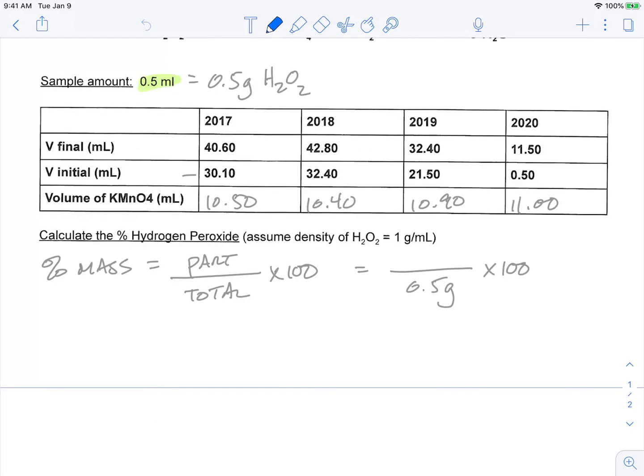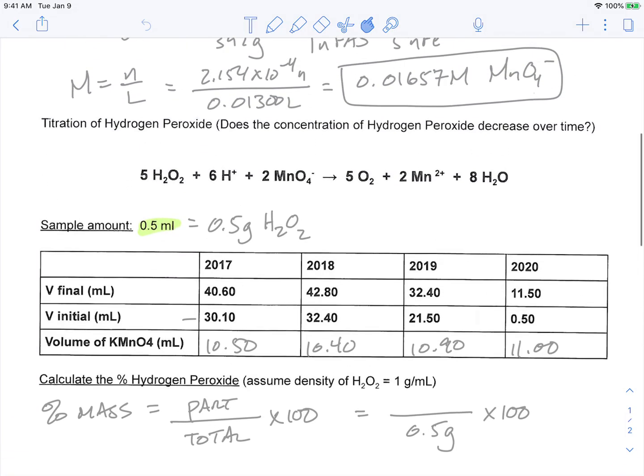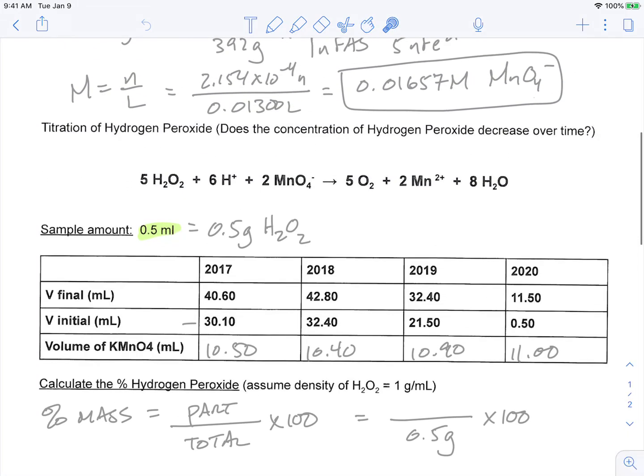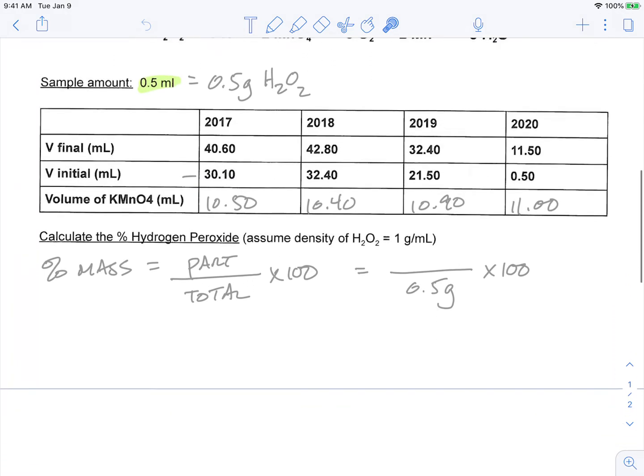All right, everybody. Hopefully what we figured out is that we have to use the concentration of our potassium permanganate solution and use the volume of potassium permanganate that we use to figure out the number of moles. So as a reminder, we know the concentration of our potassium permanganate as 0.01657 molar. If we know molarity and we know a volume, we can calculate moles. So that's going to be our first step.